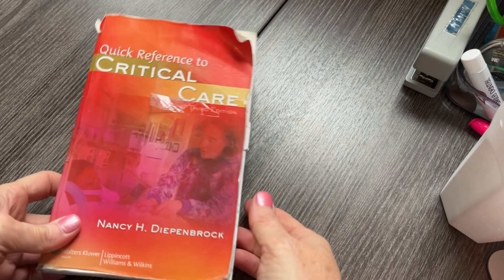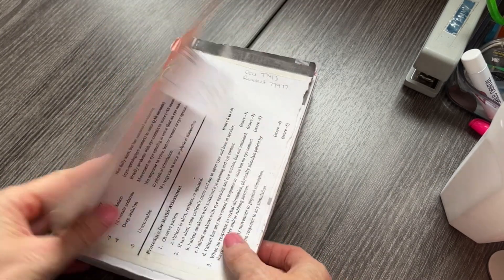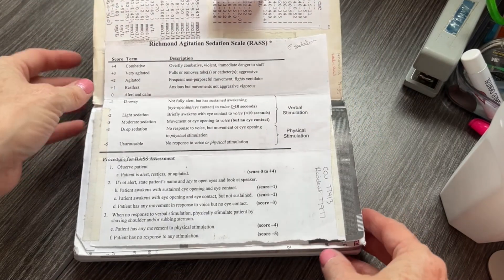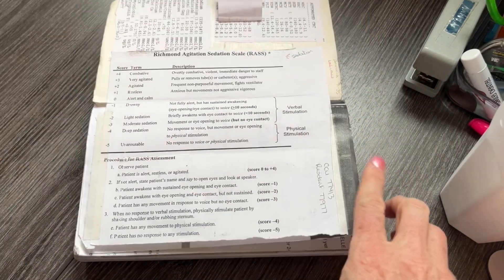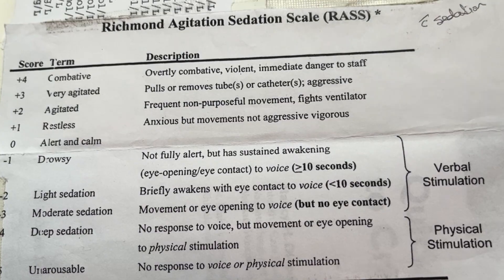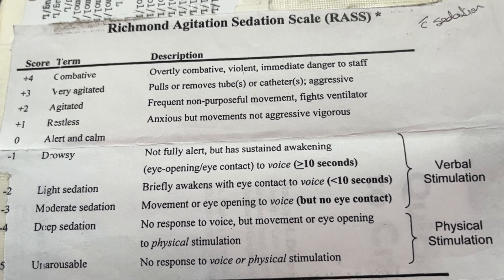In this video we're going to look at the Richmond Agitation Sedation Scale. Let's first get an overview of the scale and what the different numbers mean, and then I'm going to do a demonstration. I keep my RASS Scale inside the book cover of my Critical Care Quick Reference Guide. The range is from plus four all the way down to minus five, and these are varying levels of sedation.